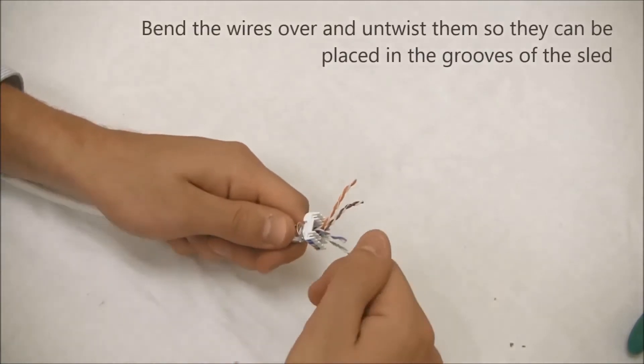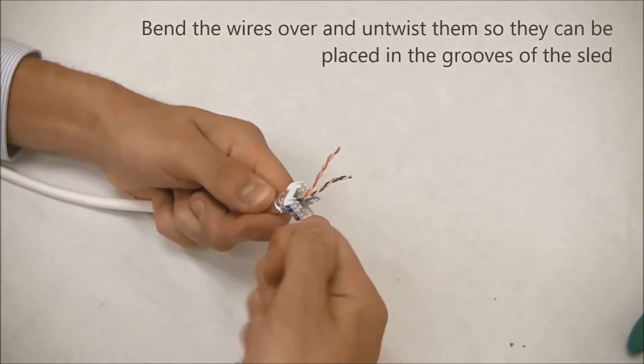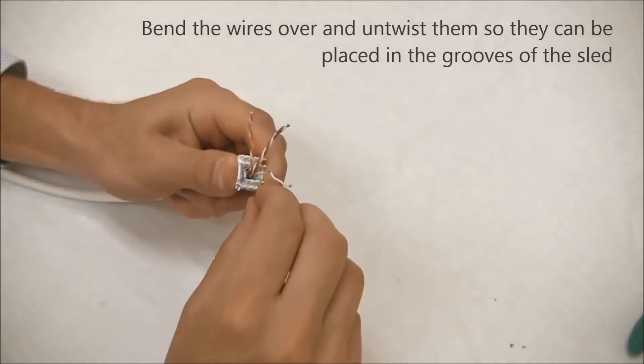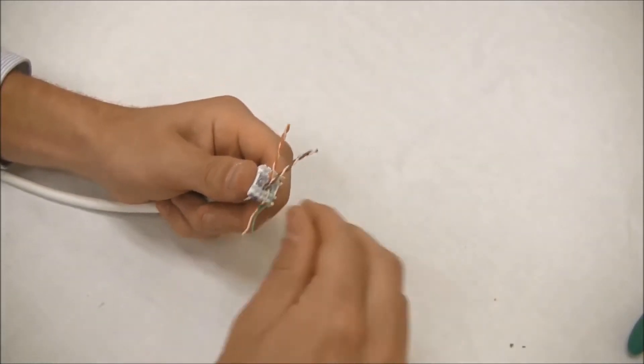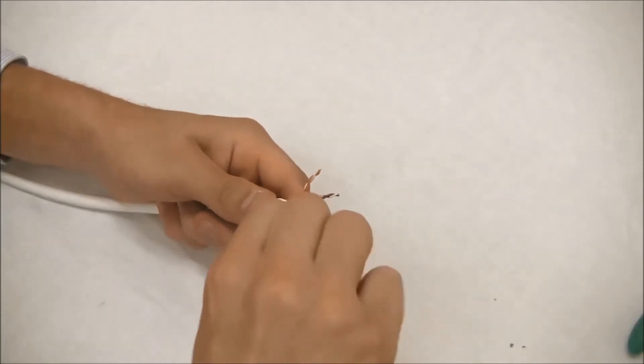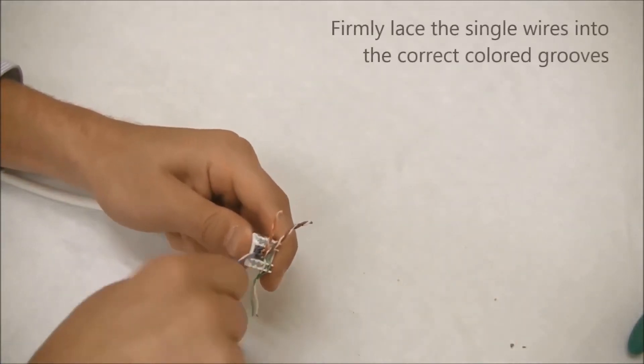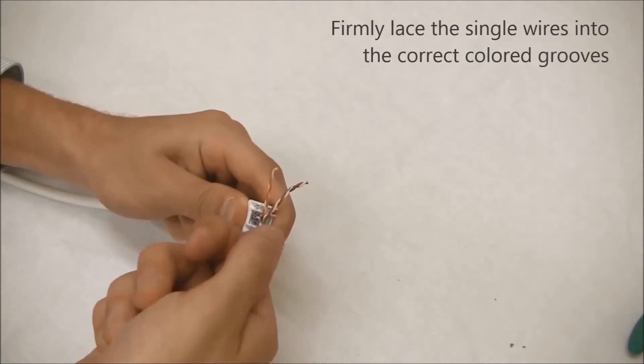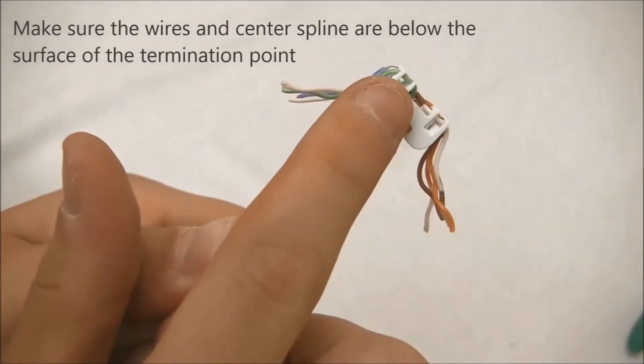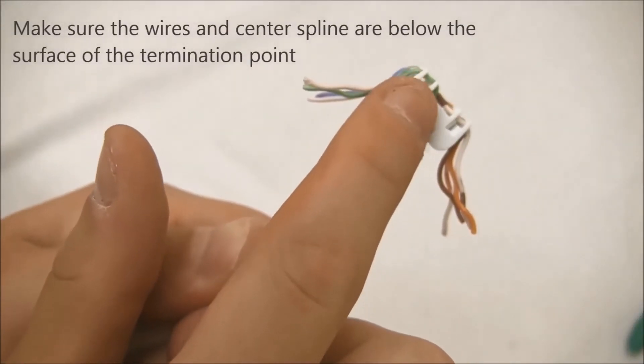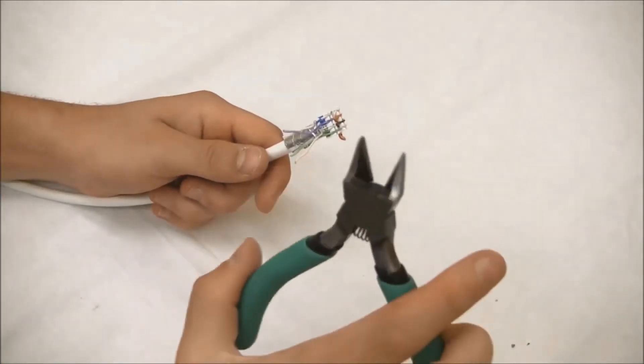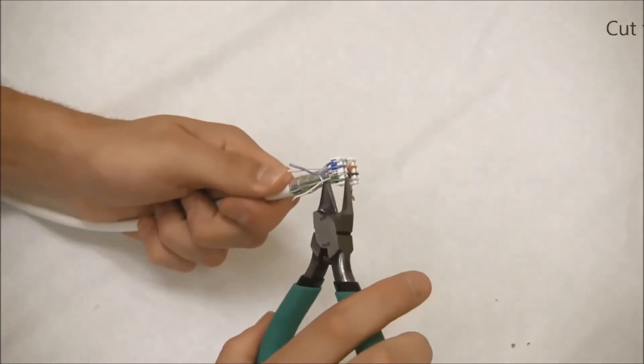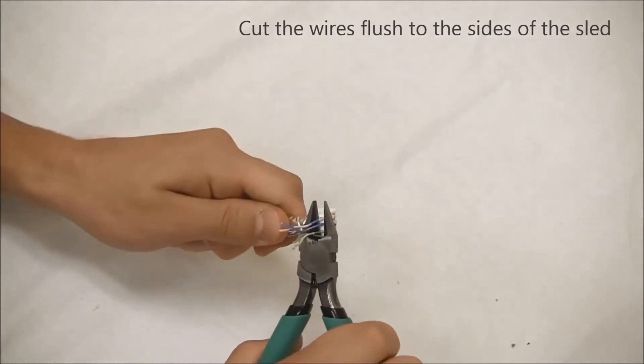Bend the wires over and untwist them so that they can be placed in the designated grooves on the top side of the sled. Then, firmly lace the single wires into the corresponding colored grooves. Be certain that all the wires and center splines stay below the surface of the termination point. Next, use wire cutters to snip the wires flush to the sides of the sled.